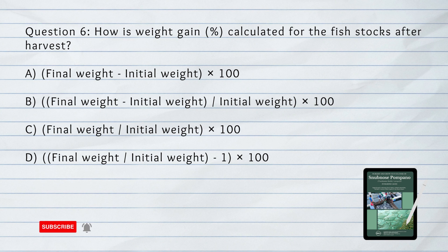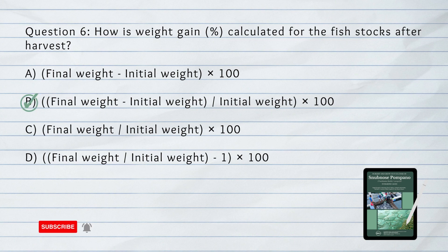Answer: B. The difference between final weight and initial weight, divided by initial weight, times 100.